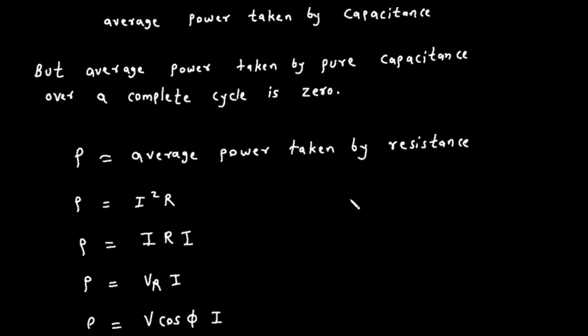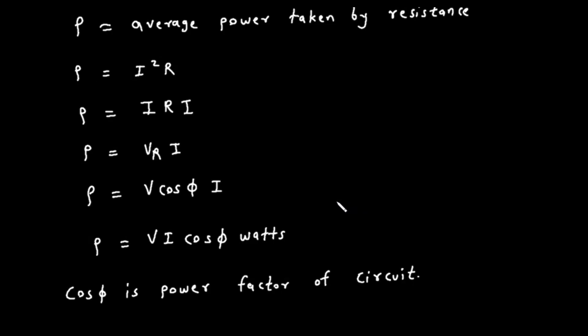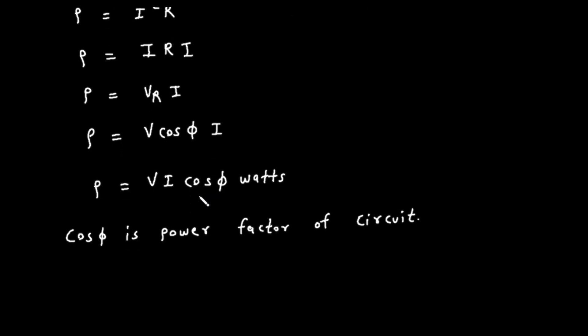We can calculate this power p in several ways. The most fundamental way is p equals i squared times r. This is the power dissipated by the resistor. Since vr equals i times r, we can also write this as p equals vr times i. And as we saw earlier, vr is also equal to v times the cosine of phi. Substituting this in, we get p equals v times cosine of phi times i. Rearranging this gives us the most common formula for power in AC circuits, p equals v times i times the cosine of phi. The unit for this real power is watts. This brings us back to the power factor. The term v times i is called the apparent power. It's what the power would seem to be if you just measured the total voltage and total current. The term cosine of phi is the power factor. It's a number between zero and one that tells you what fraction of the apparent power is actually being converted into real, useful work. In our RC circuit, the power factor, cosine of phi, is equal to R divided by Z.